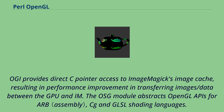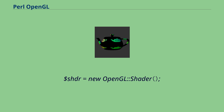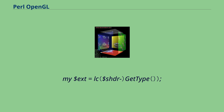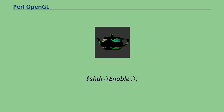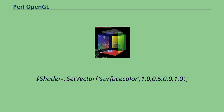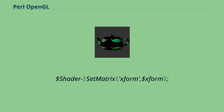The OSG module abstracts OpenGL APIs for ARB, CG, and GLSL shading languages. Example usage: $shdr = new OpenGL::shader; my $ext = lc get_type; my $stat = $shdr->load_files; $shdr->enable; $shdr->set_vector; $shdr->set_matrix; then draw, and $shdr->disable.